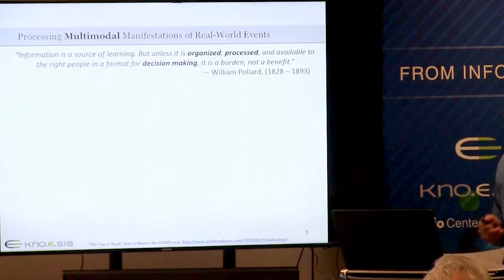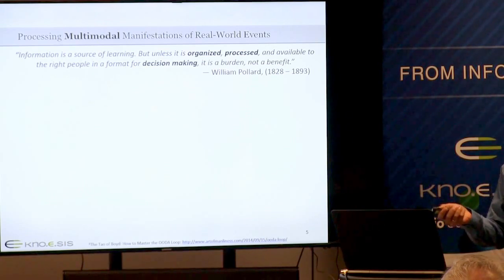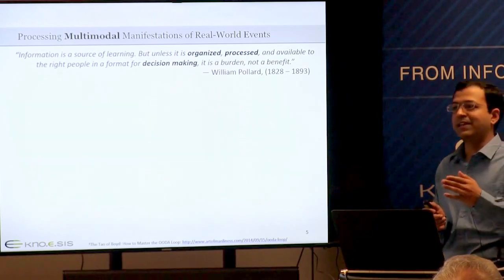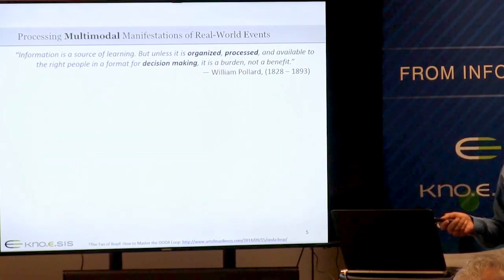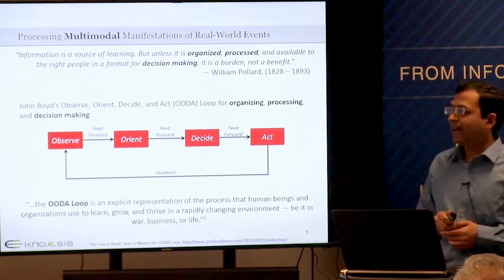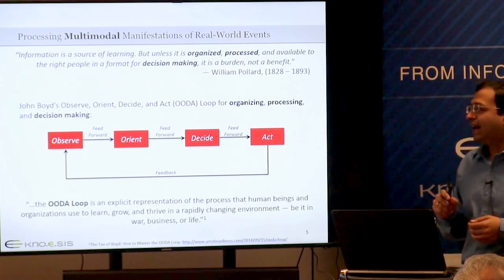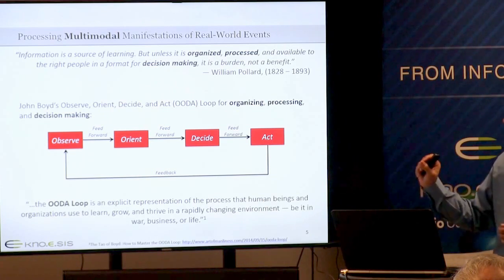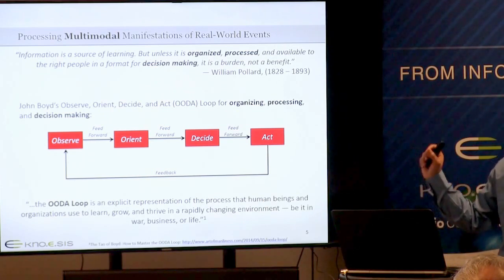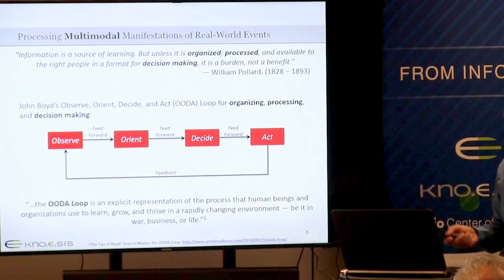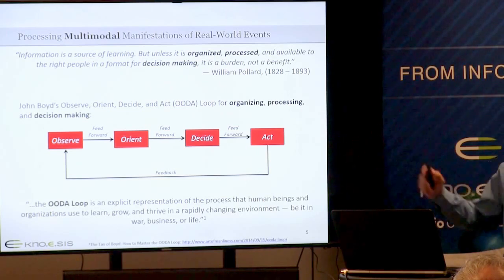There is a lot of information about all these domains, but the question is: can you really utilize it as-is? Unless it's organized and processed in a consumable way for decision makers, this information is not really useful. One of the efficient ways of dealing with this in the dynamic world is John Boyd's OODA loop. O stands for observe, the second step is orient, then decide, and act. This gives you a way of moving from observations to actions, and it's a well-accepted standard.